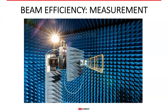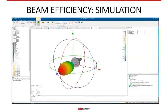We can obtain the beam efficiency of an antenna in several ways. One of them is measurement done in an anechoic chamber, where the antenna is attached to a rotary stage that rotates in two axes and measures the radiation pattern of an antenna in 3D space. Based on that measurement, beam efficiency can be calculated. If the model of an antenna is precise enough, or an antenna is simple, we can also use simulation software to obtain the radiation pattern and calculate the beam efficiency from that.